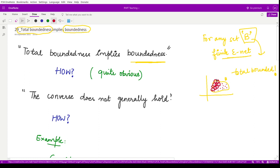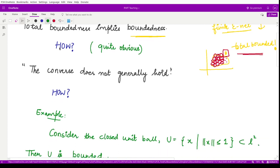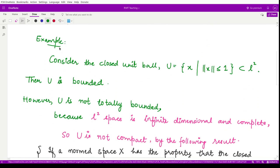If these points are finite in number, we say the set is totally bounded. In this case, B is totally bounded, and you can see that set B is also bounded because it is finite in nature. However, the converse does not generally hold. We can see this through an example.